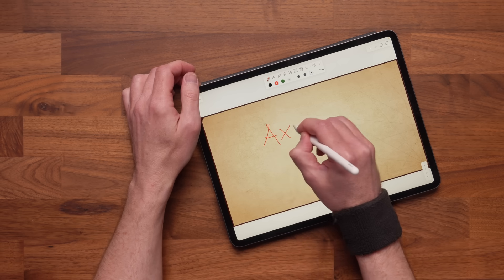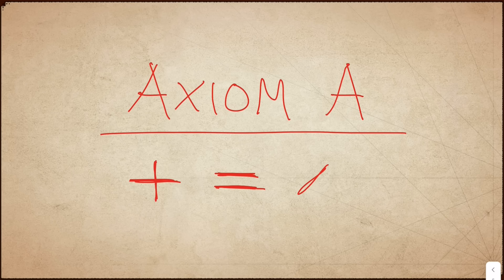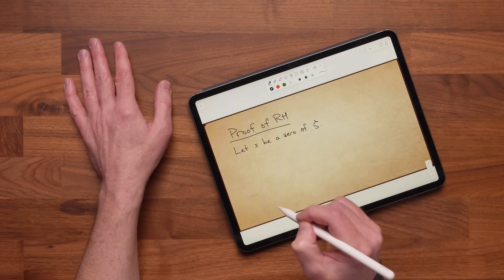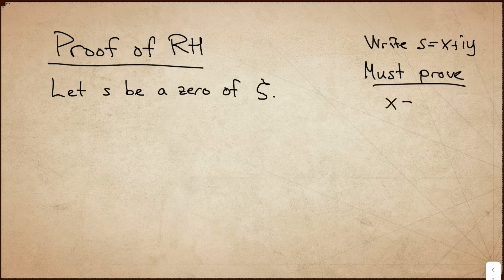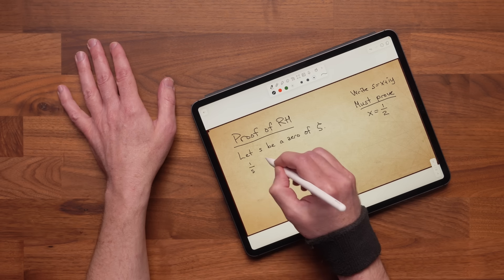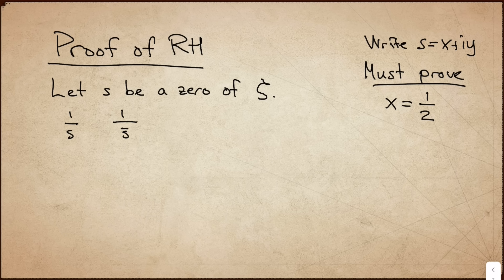Let me present Axiom A: Addition Equals Multiplication. Let s be any zero of the Riemann zeta function. We can always write s as x plus iy, and the aim is to prove that x equals one half. I'll write down one over s and one over the complex conjugate s-bar of s. So s-bar means x minus iy.